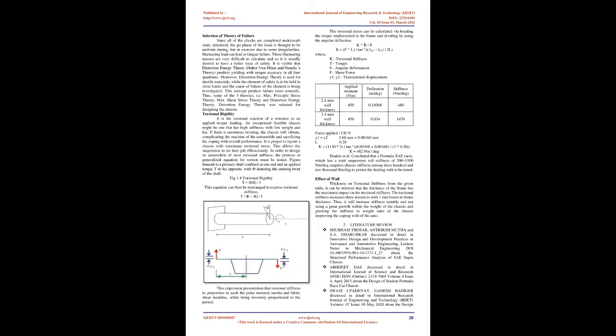Torsional Rigidity. K = Torsional Stiffness, T = Torque, A = Angular Deformation, F = Shear Force. Torsional rigidity is the torsional reaction of a structure to an applied torque loading. An ideal chassis would have high stiffness with low weight and cost. If there is significant twisting, the chassis will vibrate, complicating vehicle behavior and sacrificing handling performance. It is proper to design a chassis with maximum torsional stiffness, allowing the suspension to do its job effectively. The generalized equation for torsion is T/θ = JG/L, showing that torsional stiffness is proportional to the polar moment of inertia and shear modulus, and inversely proportional to length.